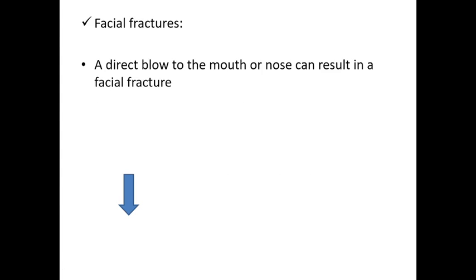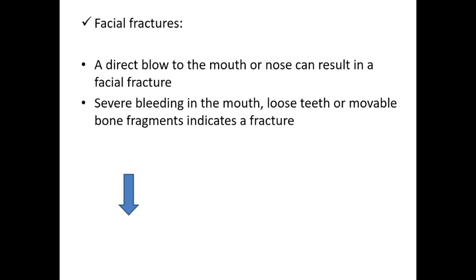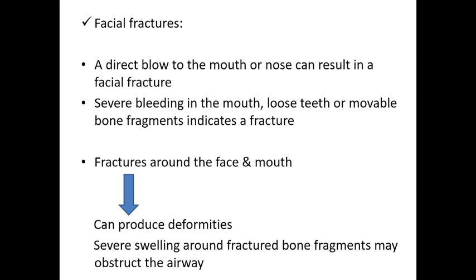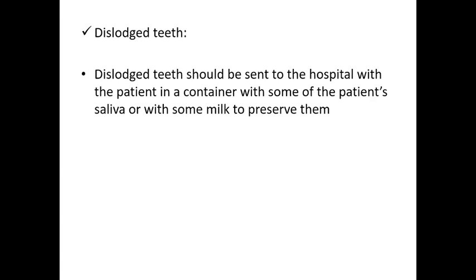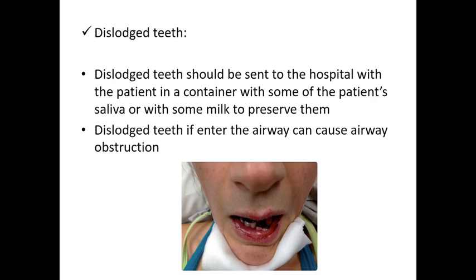A direct blow onto the nose can fracture the nasal bone. Other features of facial bone fractures include bleeding into the mouth, loose teeth, and movable bone fragments. Fractures around the face and mouth can cause deformity and swelling that may obstruct the airway. Dislodged teeth should be preserved in saliva and sent with the patient to hospital; if they enter the airway, they can obstruct breathing.